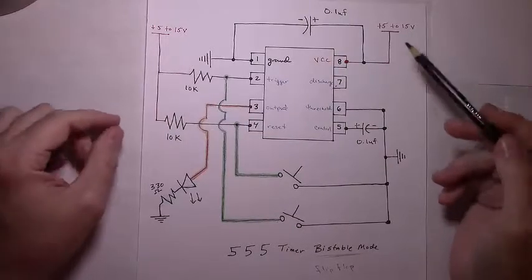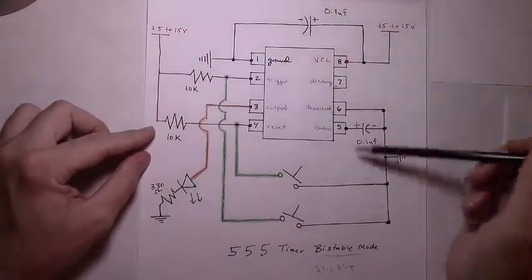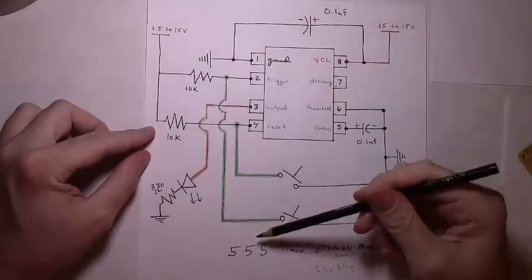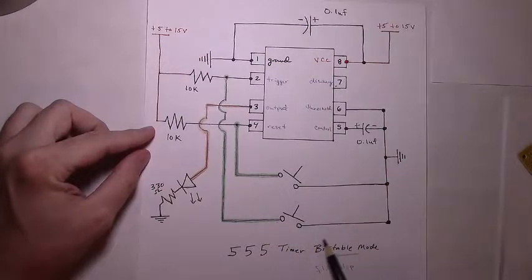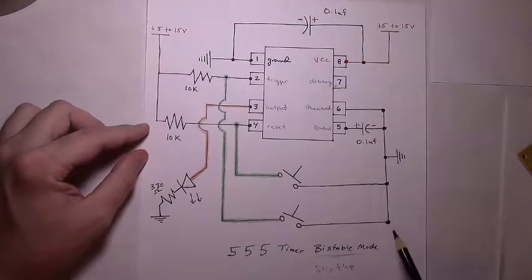Welcome. In this video we'll be constructing this circuit. It is a 555 timer circuit and it puts the timer in bi-stable or flip-flop mode. It's a really useful circuit for a lot of things.